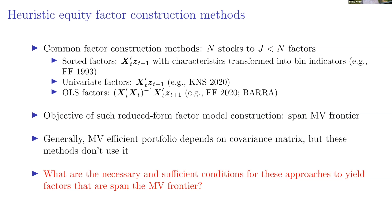Generally, to span the mean-variance frontier we need information about the conditional means of all assets and the full covariance matrix of all stock returns. When we take stocks and put them into portfolios, we're essentially discarding that covariance matrix information. So we ask three questions in this paper.